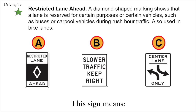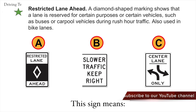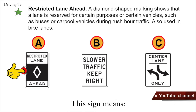Restricted lane ahead. A diamond-shaped marking shows that a lane is reserved for certain purposes or certain vehicles, such as buses or carpool vehicles during rush hour traffic, and also used in bike lanes. The correct answer is A. Restricted lane ahead.